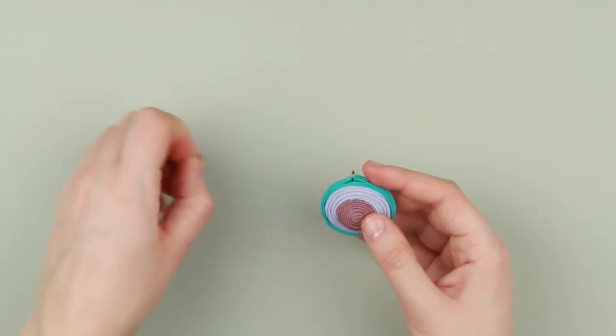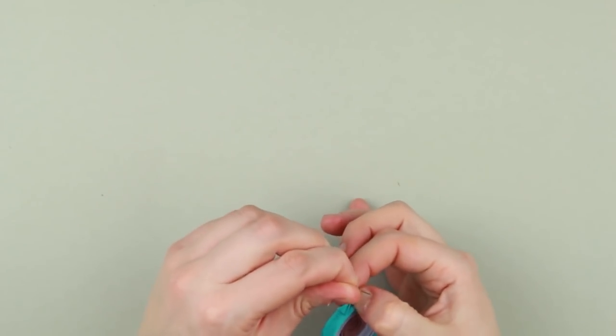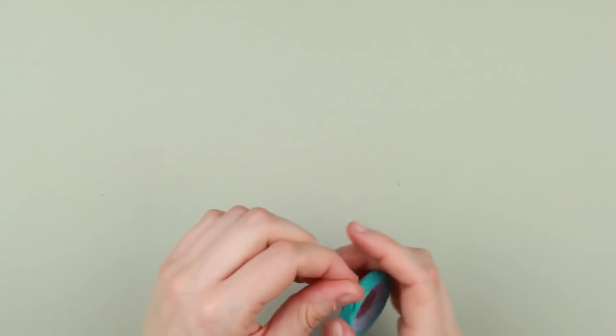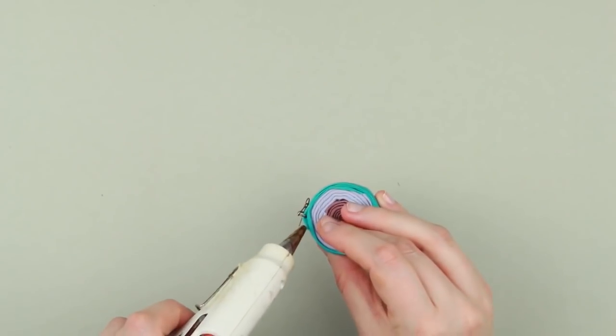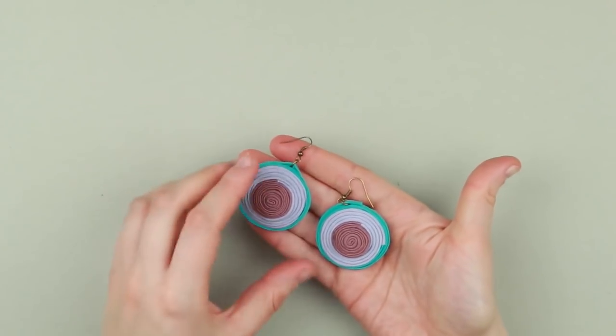Put on a hook. Press over with your fingers to hold well. Hot glue the end if necessary. Make the second earring in the same way.